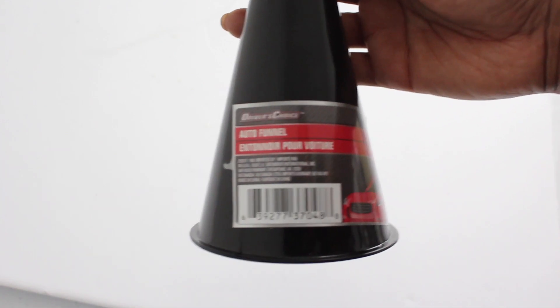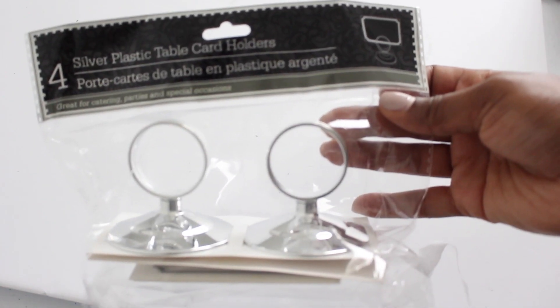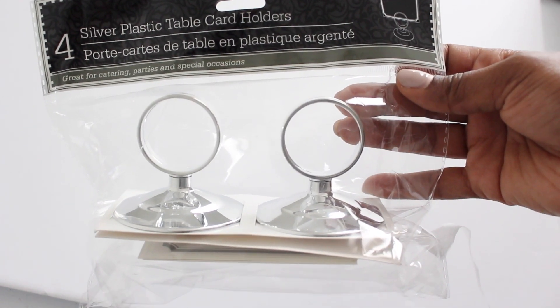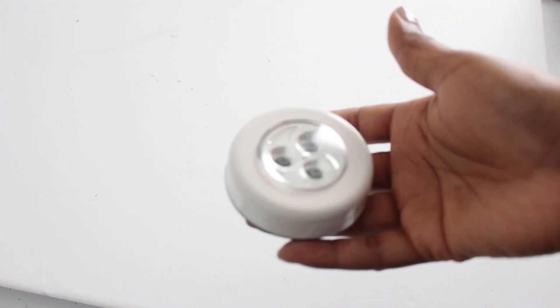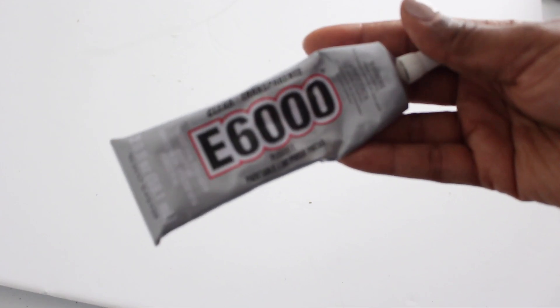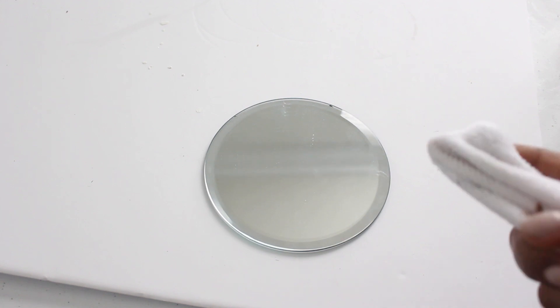For this project you will need a round mirror, an auto funnel, silver plastic table card holders (it comes four in a pack), a push light or any battery operated light that you have, and E6000. I'm going to be making two of these lights.